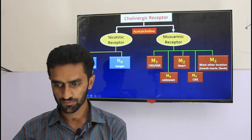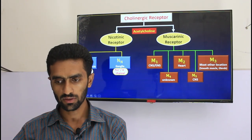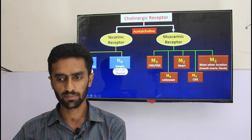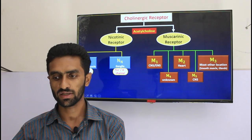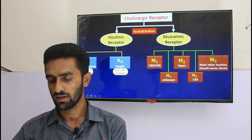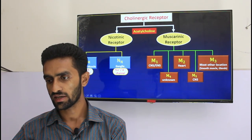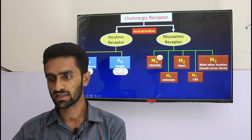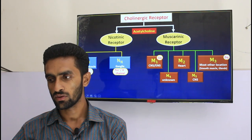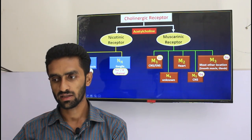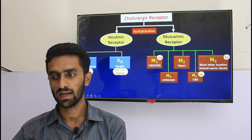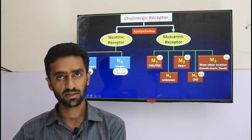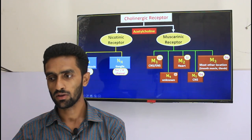The mechanism of action involves sodium-potassium channels for nicotinic receptors, while muscarinic receptors are G-protein coupled. M1, M3, and M5 are Gq-coupled, while M2 and M4 are Gi-coupled.